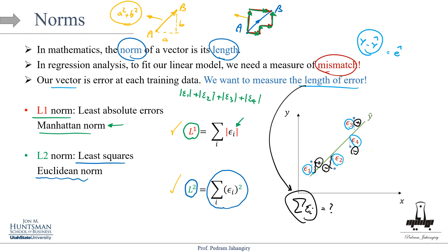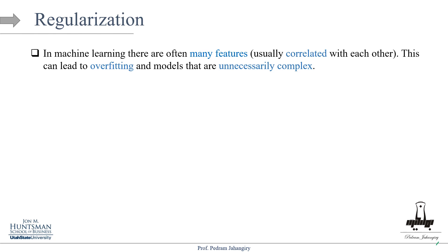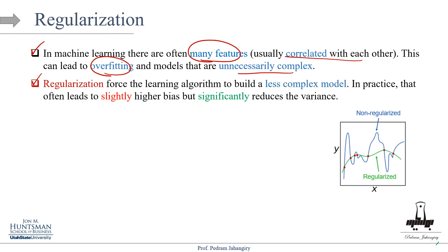Now let's apply these concepts to help us model regularization and add it to our linear regression model. In machine learning there are often many features, and those features are usually correlated with each other. This leads to overfitting and constructing models that are unnecessarily complex. This is most often the case in machine learning models. Regularization forces the learning algorithm to build a less complex model — that's the key insight.